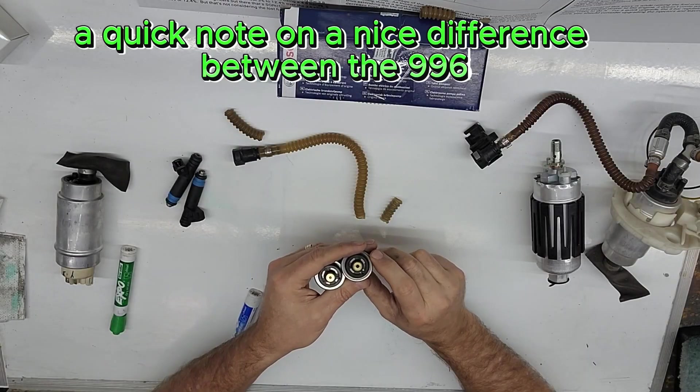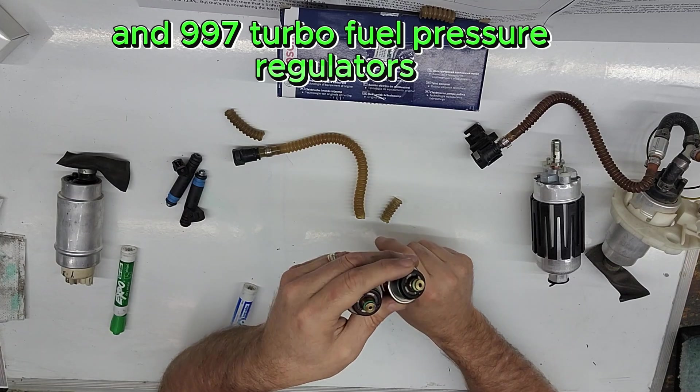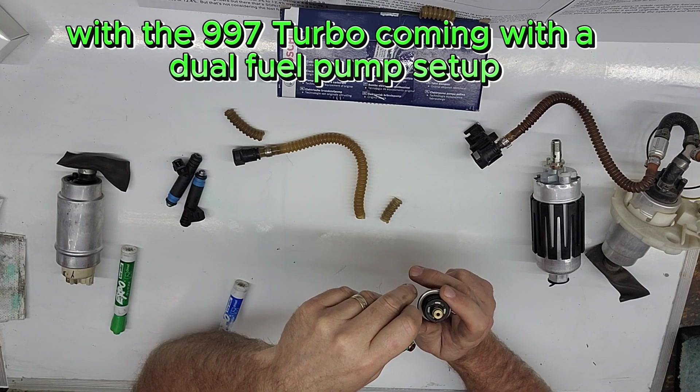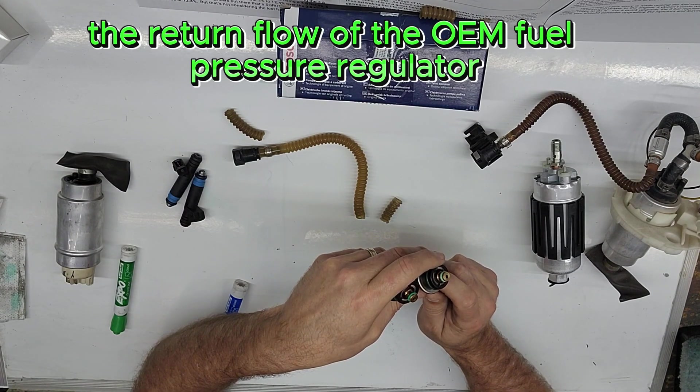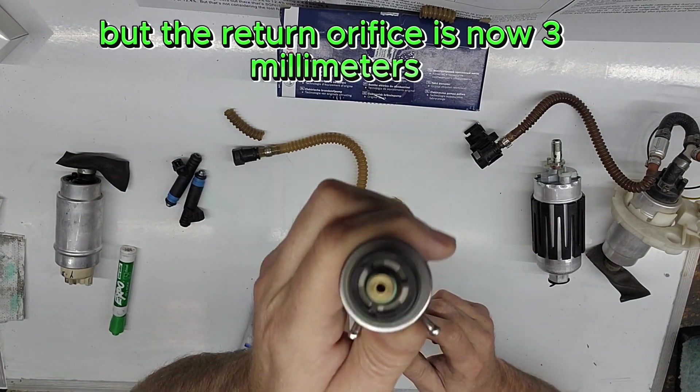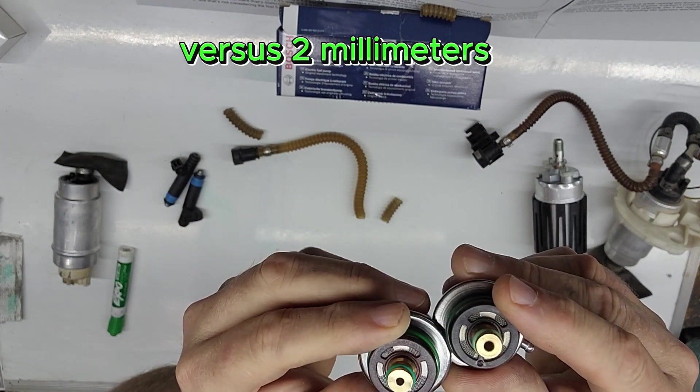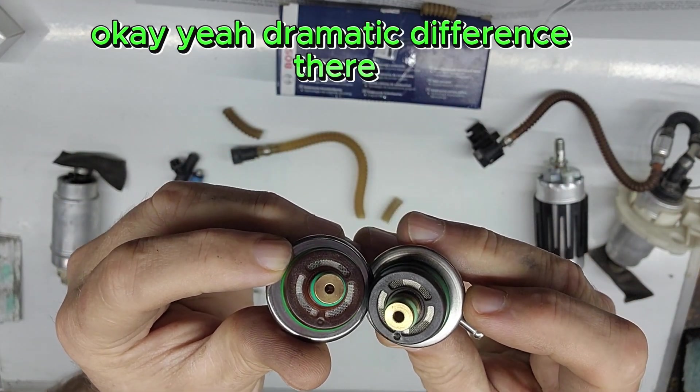A quick note on a nice difference between the 996 and 997 turbo fuel pressure regulators. With the 997 turbo coming with a dual fuel pump setup, Porsche increased the return flow of the OEM fuel pressure regulator. It's still 3.8 bar, but the return orifice is now 3 millimeters versus 2 millimeters. If you can see that. Dramatic difference there.